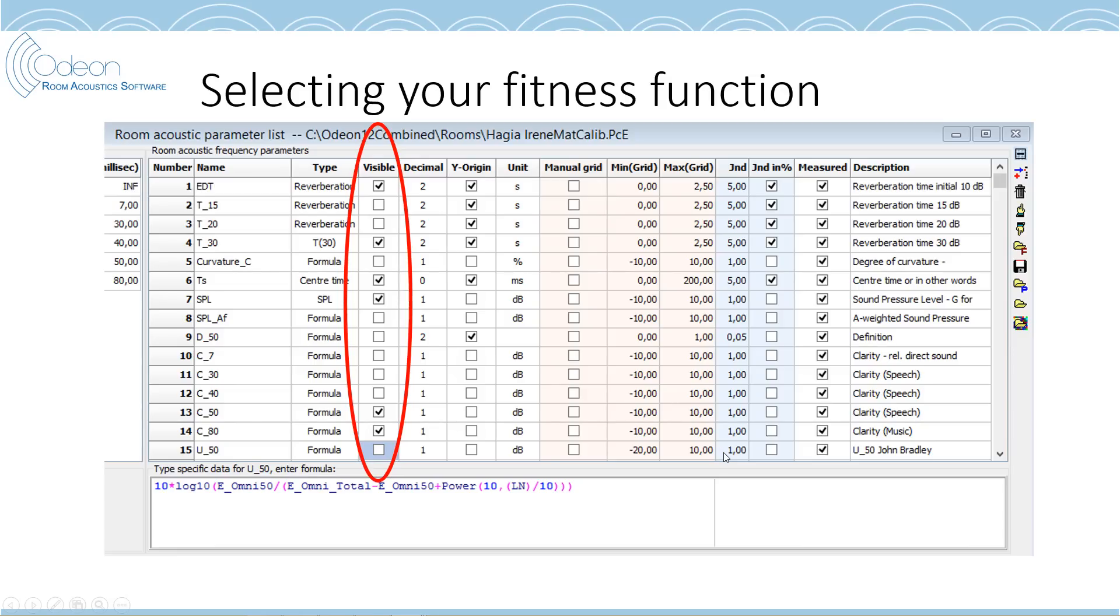Here you see the JNDs for different parameters. And what I show here is the room acoustics parameter list in Odeon, where you can decide which parameters should be visible. And therefore, we only check some of the parameters like, in this case, EDT, T30, gravity time, SPL, which is comparable to G, and C50 and C80. So, you can decide what parameter you want to put in your fitness function.